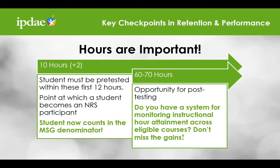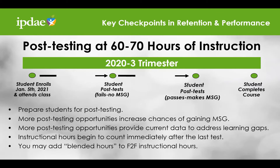Let's take a closer look at what happens when we consistently test students at 60 to 70 hours of instruction. We need to be clear that students who have not demonstrated at least 70 to 75 percent mastery of all tested content should not be tested for the sake of testing — this recommendation is based on the premise that the student is in fact ready for post-testing. In this example, you can see that the student enrolls on January 5th and is post-tested after accumulating 68 instructional hours. Though the student was prepared, the student does not make a measurable skills gain. The student returns to class and now gains 78 hours of instruction before the teacher is confident the student is ready to post-test. This time, the student post-tests and does make a measurable skills gain.